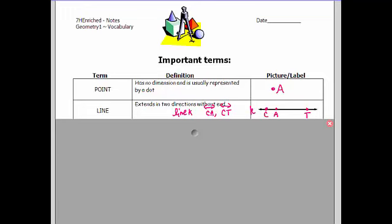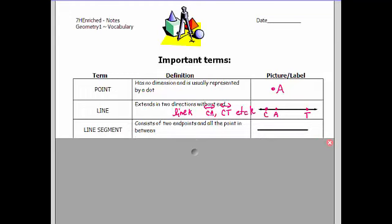AT, TA, AC, etc. A segment is just the end points and the points in between. It does matter here if I want to refer to this particular line segment that I choose those end points. And that would be CA or I could call it AC. Same line segment.